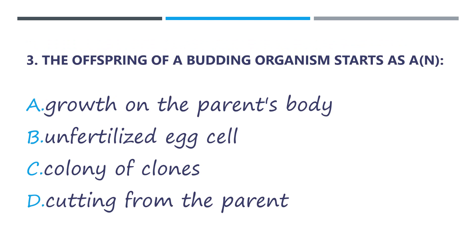Number 3. The offspring of a budding organism start as... A. A growth on the parent's body. B. An unfertilized egg cell. C. A colony of clones. And letter D. A cutting from the parent.